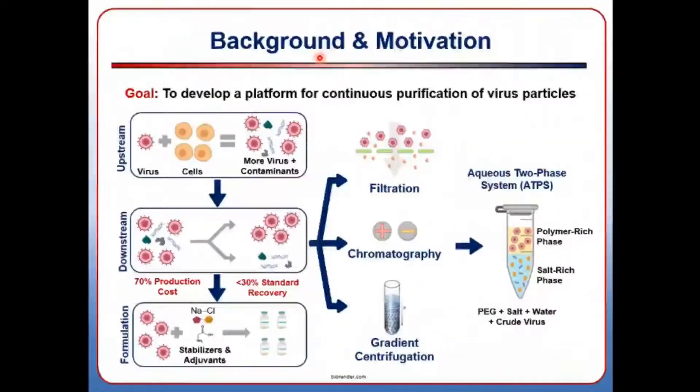Vaccine manufacturing follows a pattern similar to most bioprocesses. Virus particles are produced in a bioreactor, purified from leftover pieces of cells, and packaged with stabilizers and adjuvants. 70% of the production cost tends to be concentrated in the purification steps, and typical recoveries are less than 30%, so my research focuses on improving the downstream segment of the process.